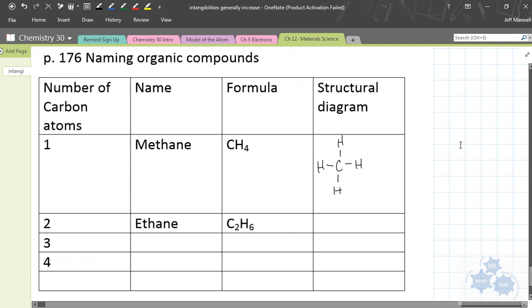Page 176, naming organic compounds. Organic compounds, first of all, are compounds that have carbon in it. Organic, from living things. Something that's organic is characterized by having carbon in it. So carbon C is a big part of organic compounds. And there are some very simple, basic organic compound chains, simple carbon chains, and that's what we're going to learn how to name here today.